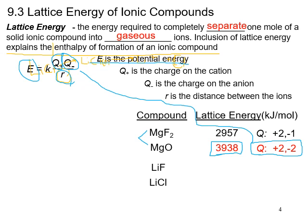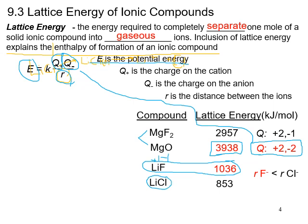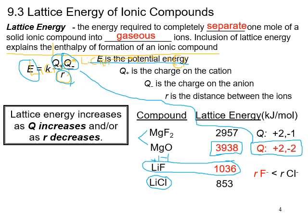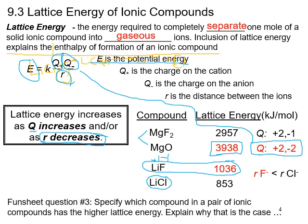Looking at lithium fluoride versus lithium chloride: LiF has a lattice energy of 1036 and LiCl is 853. Both have charges of +1 and –1, so charge is not the differentiating factor. The difference must be how close the ions are — lithium and fluorine can get much closer together because their sizes are more comparable, whereas lithium and chlorine are farther apart, making it easier to break their electrostatic attraction, hence the lower lattice energy. Lattice energy increases as charge increases and as r decreases. Try fun sheet question number three.